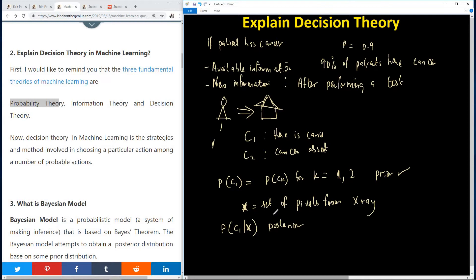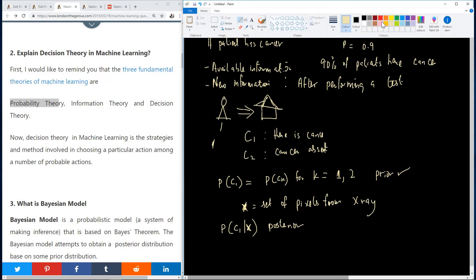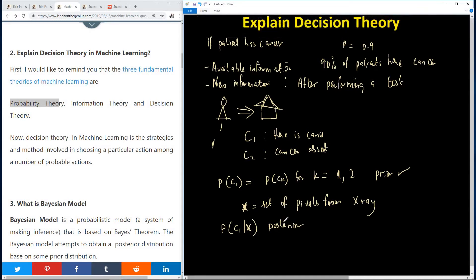So one thing you need to know is that how do we calculate the posterior probability? And that is where Bayes theorem comes into place. I'm going to state it here. Bayes theory helps you to calculate the posterior probability.